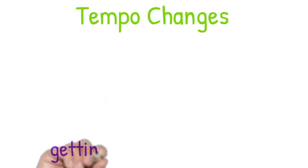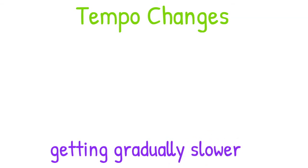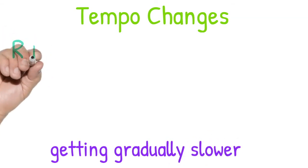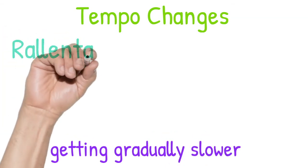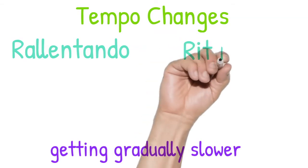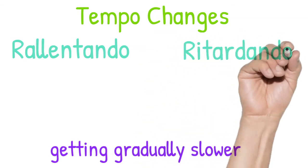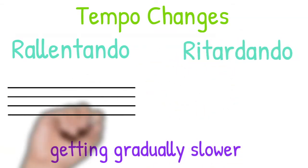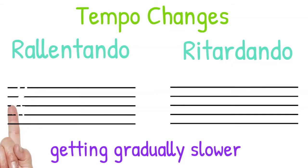When the tempo gets gradually slower, there are two words that can be used: ralentando or ritardando. There is a slight difference between them, but both indicate that the music gets gradually slower.